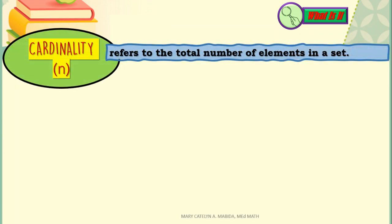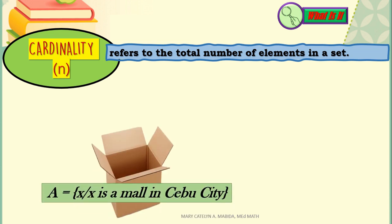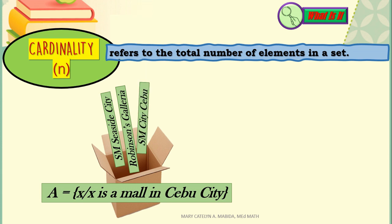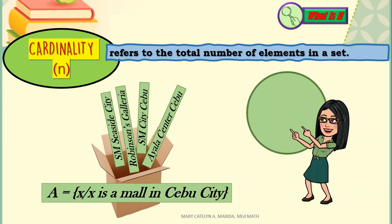Now let's talk about cardinality. Cardinality refers to the total number of elements in a set. For example, set A — x such that x is a mall in Cebu City. The malls in Cebu City are SM Seaside City, Robinson's Galleria, SM City Cebu, and Ayala Center Cebu. Counting the elements: 1, 2, 3, and 4. Therefore, the cardinality of set A is 4, or there are 4 elements in set A.